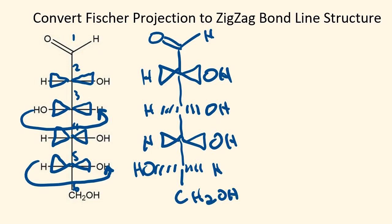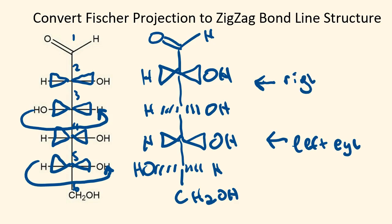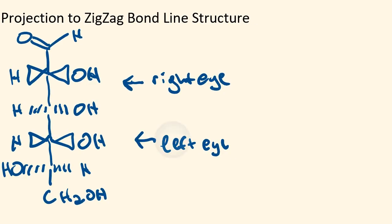Now if we look at it from the same point of view as before, with our left eye here and our right eye here, here is what we're going to see. It's important to remember that when you have your side groups on a wedge, that is at the top of the zigzag, and when you have your side groups on a dash, that is at the bottom of the zigzag. Using the same numbering scheme, one through six: